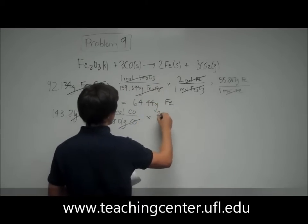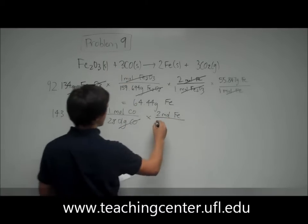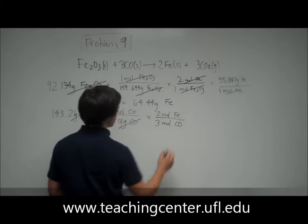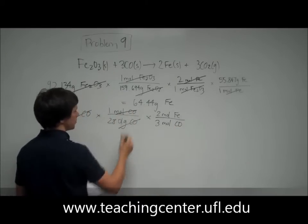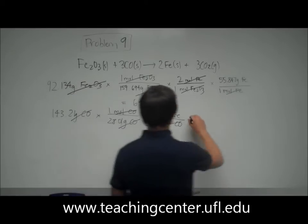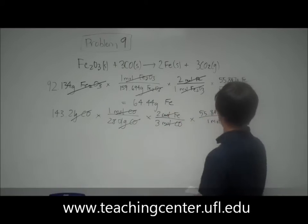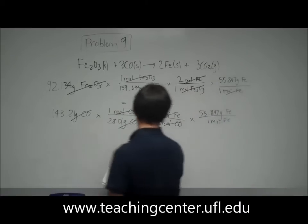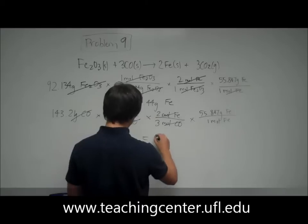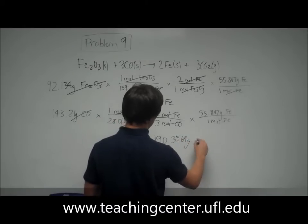And then you use the conversion factor. So notice that you get 2 moles of iron for every 3 moles of carbon monoxide that react. So now the moles of carbon monoxide cancel out. And then one last step, it's the same as on top. You get 55.847 grams of iron for every one mole of iron. So those cancel out. And you're left with 190.3569 grams of iron.